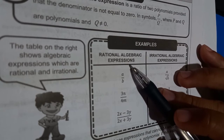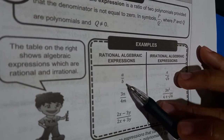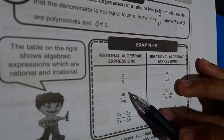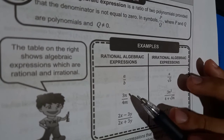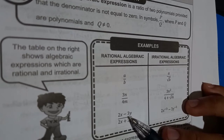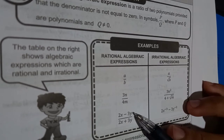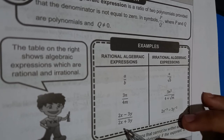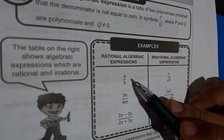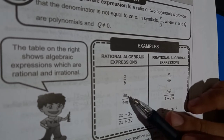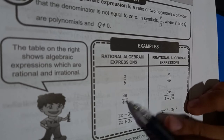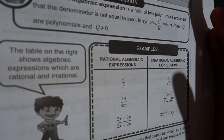As examples of rational algebraic expressions: a over b, where a is the numerator and b is the denominator; 3n over 4n is a rational algebraic expression; and 2x minus 3y over 2x plus 3y — both the numerator and denominator are binomials, which are polynomials. In this case each part is a monomial, but they are still polynomials.